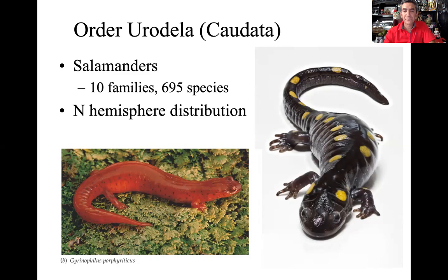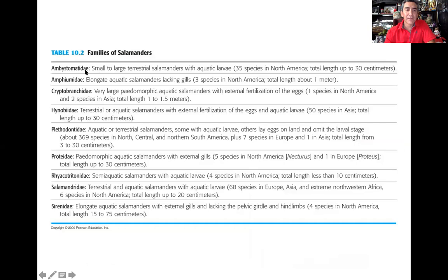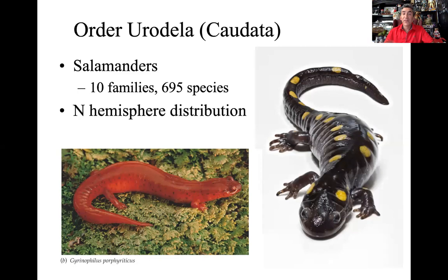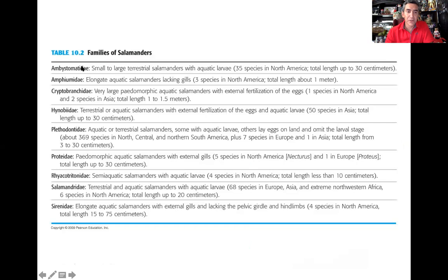There are lots of different groups. We have our 10 families, and when we talk about families, they're designated with the suffix -IDAE. So the Ambystomatidae, Amphiumidae, Cryptobranchidae, Hynobiidae, Plethodontidae, Proteidae, Rhyacotritonidae, Salamandridae, and Sirenidae. When you see -IDAE, you're talking about a taxonomic family level. The classification goes: Kingdom Animalia, Phylum Chordata, Subphylum Vertebrata, Class Amphibia, Order Caudata or Urodela, and then these 10 families.